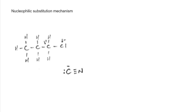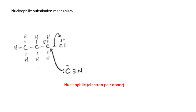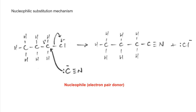Moving on to the mechanism — remember it's nucleophilic substitution. The cyanide ion has a lone pair of electrons clearly available to donate, so CN⁻ acts as a nucleophile. It is attracted towards the slightly positive carbon in the polar C–Cl bond. That pair of electrons is then completely repelled onto the chlorine, breaking that bond. The potassium ions are not shown because they are spectating in the reaction.